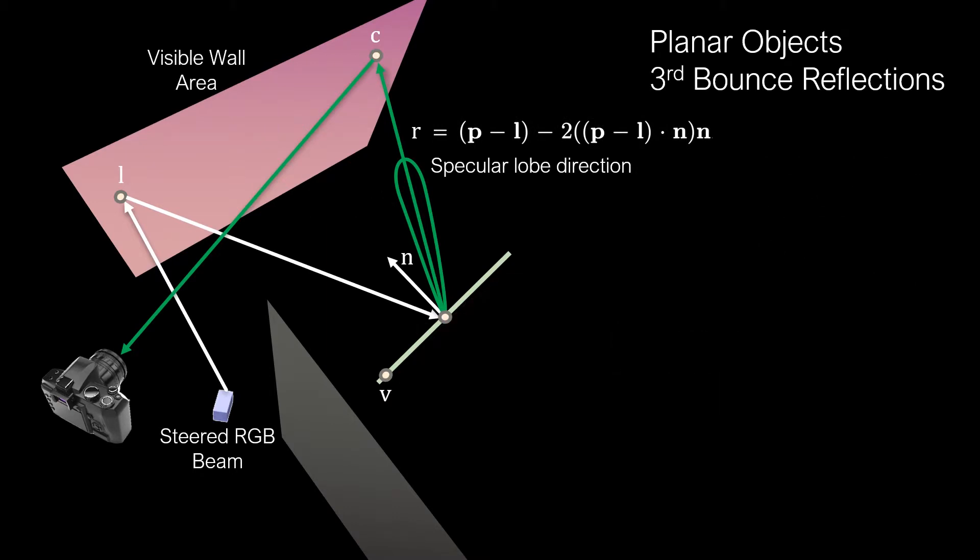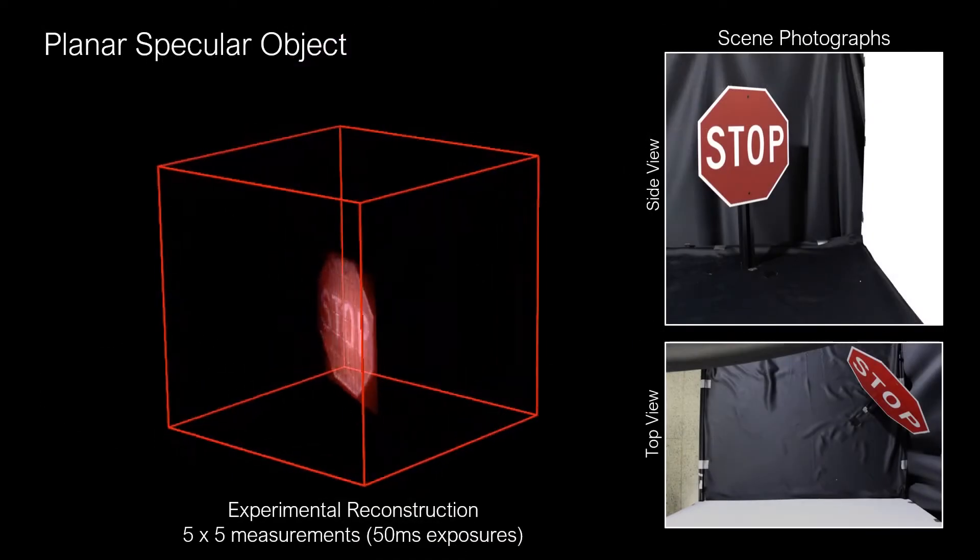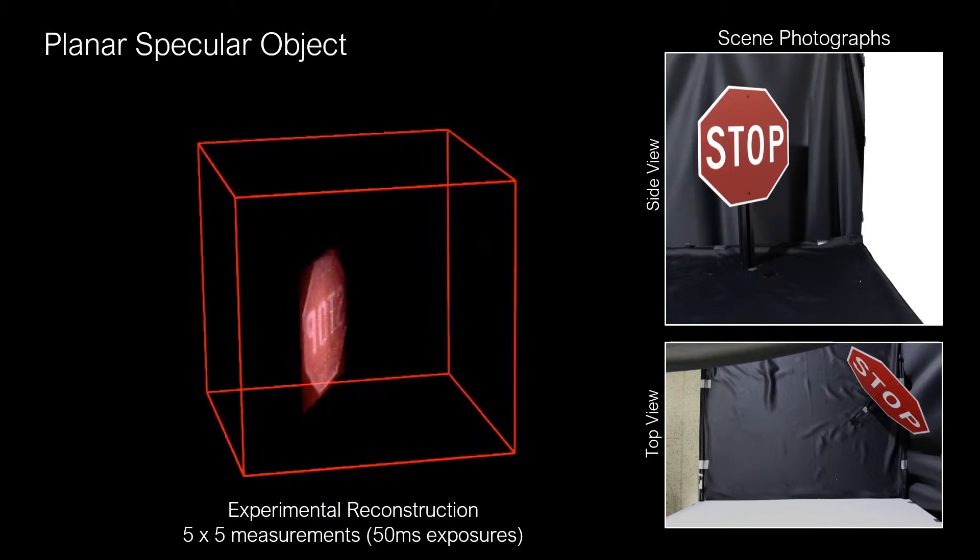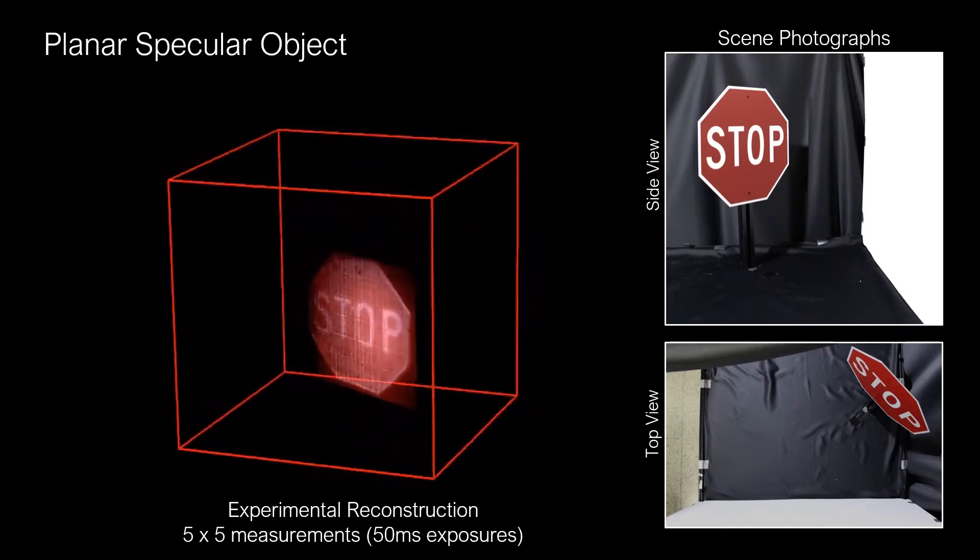We recover the planar object with an efficient optimization method by expressing the object point P as a function of the plane geometry and the visible points L and C, which we measure. Doing so allows us to extract geometry and specular albedo with surprisingly high quality.